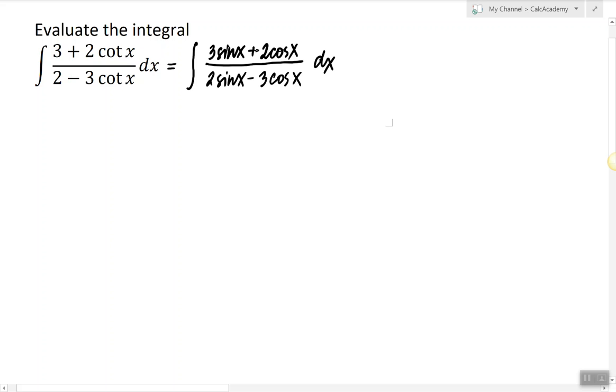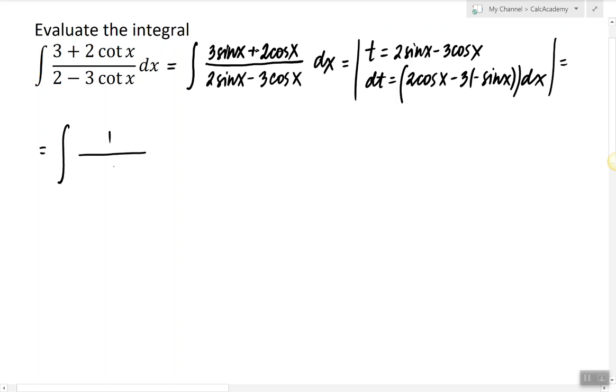So the non-trivial substitution here is t equals 2 sine x minus 3 cosine x. dt then is 2 cosine x minus 3 negative sine x dx, and we notice that the numerator is exactly dt and the denominator is just t.